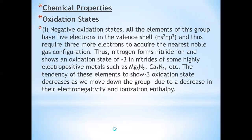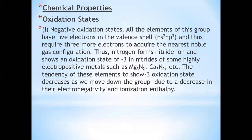Ionization enthalpy is the energy required to remove an electron from an isolated gaseous atom. Down the group, as size increases, ionization enthalpy decreases. Due to extra stable half-filled p orbitals, electronic configuration, and smaller size, ionization enthalpy of group 15 elements is greater than that of group 14 elements in the corresponding period.